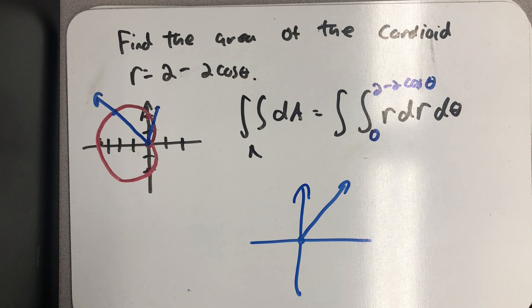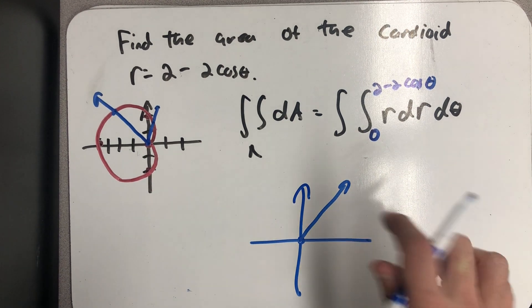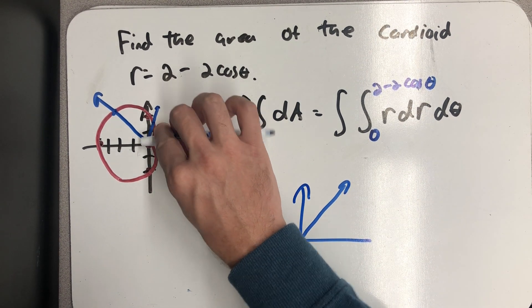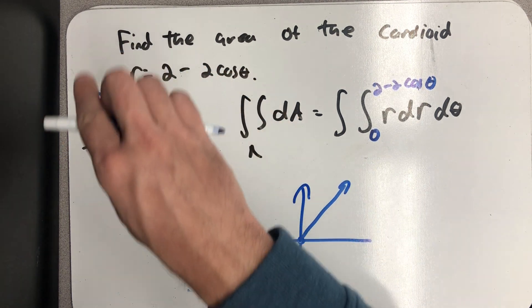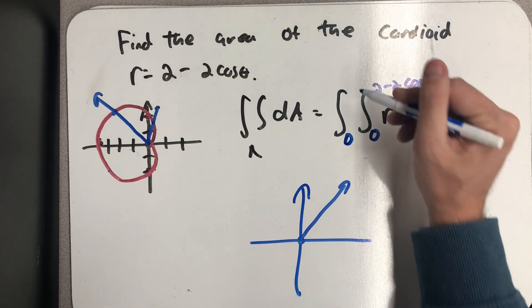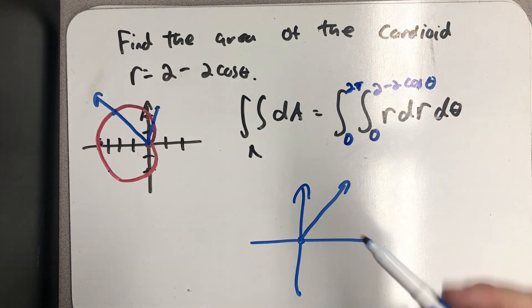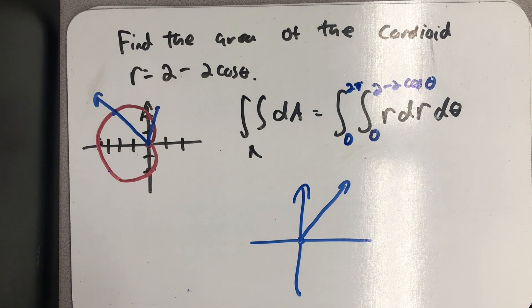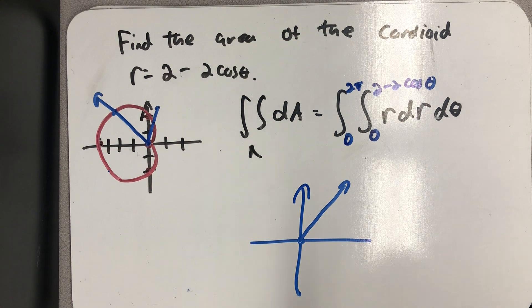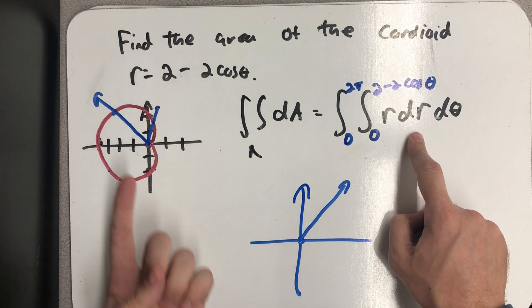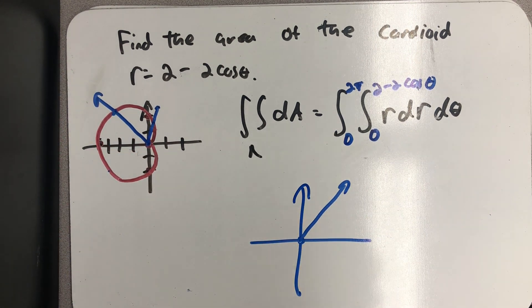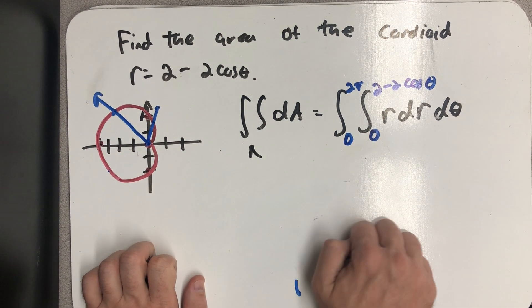Now I need bounds for theta. I start plotting and go one full revolution all the way around, so the bounds for theta are 0 to 2π. I've found my bounds using the same procedure: draw a ray in increasing order of R, start somewhere, go somewhere. Let's evaluate this double integral.